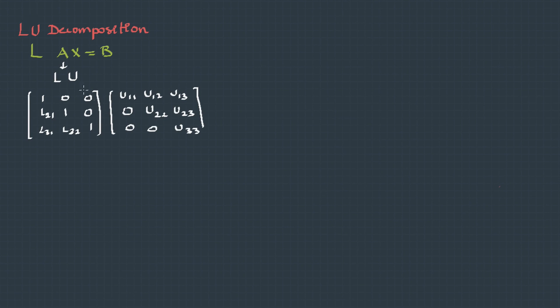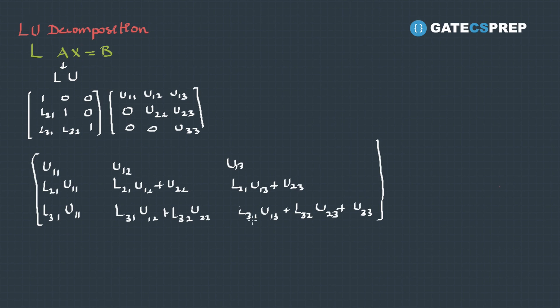But how do we get two triangular matrices from a coefficient matrix? For this, we'll first multiply these matrices with these variables, which forms this particular matrix. And we already know this is equivalent to A. To understand this, let's take an example.